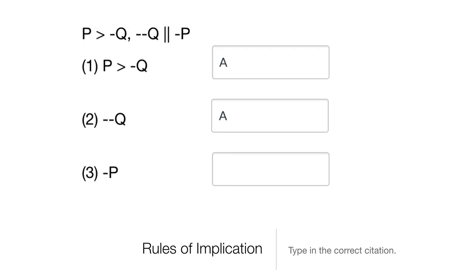We have two premises: 'if P then not Q' and 'not not Q,' and the question is what rule do we use to get to the conclusion 'not P.' Is it disjunctive syllogism? No — there's no disjunction. Is it the dilemma? No, same reason. The first premise has a conditional, and the second premise is the negation of the consequent of that conditional. That lets us infer 'not P' using modus tollens.